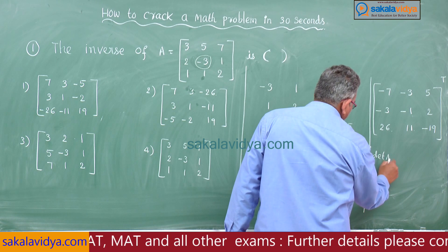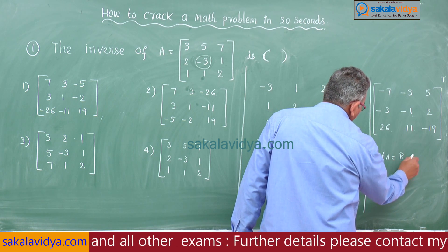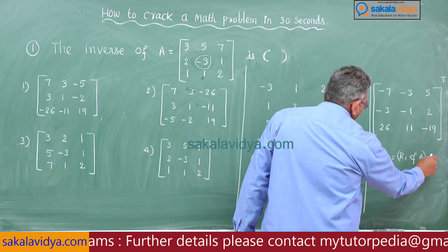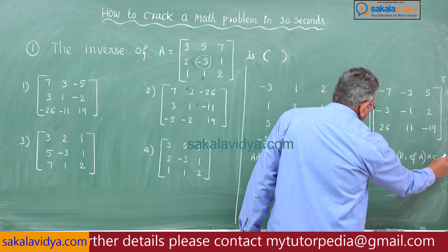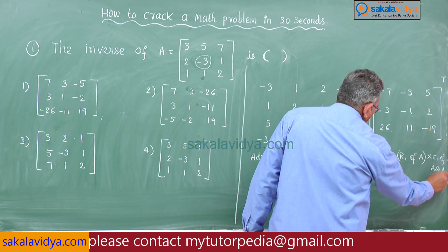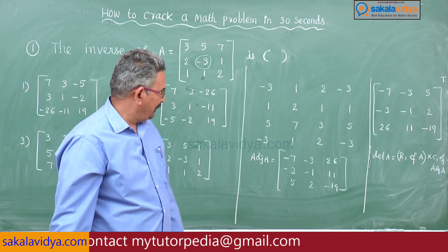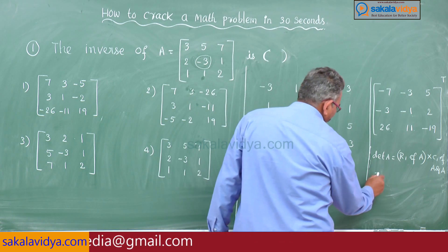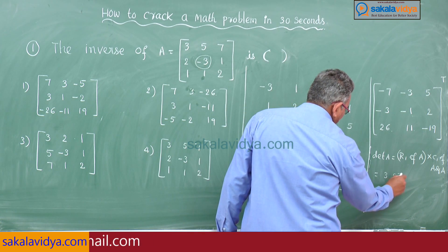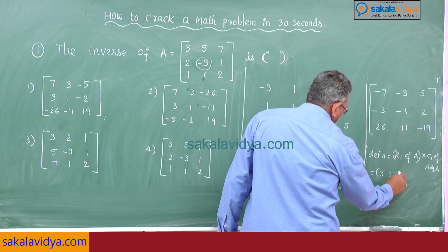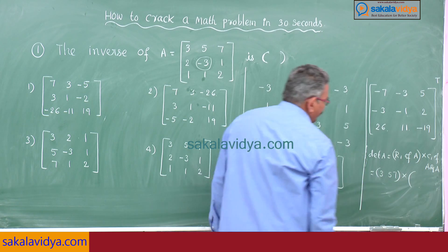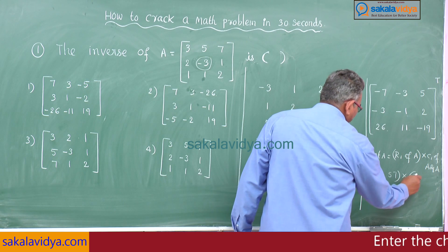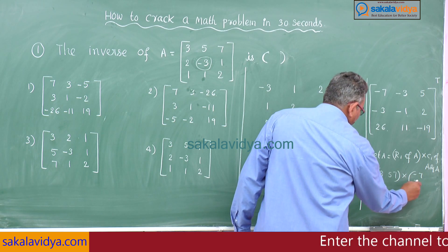I will explain how to find out det A. Det A equals R1 of A multiplied by C1 of adj A. R1 means 3, 5, 7 multiplied by C1 column of adj A. Column of adj A is -7, -3, 5.